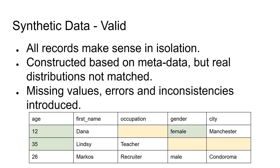Next, we have what's called synthetic data valid, which preserves the format and data types exactly as structural data did before, with the addition that all rows in isolation should make sense. So we shouldn't have any conflicting information in a record — there shouldn't be any employed infants in a data set, unless there actually were employed infants in the original data set. We draw our values from realistic sources, but make no attempt to copy the actual distributions. In a data set based on Manchester, a 100-year-old might be no rarer than a 10-year-old.